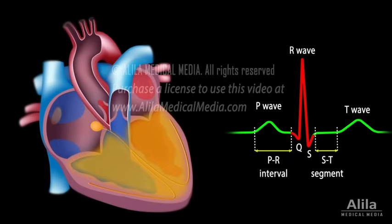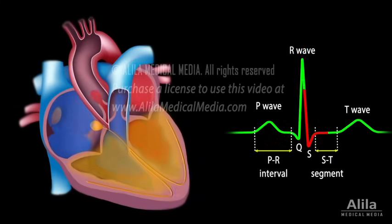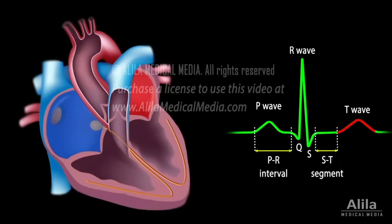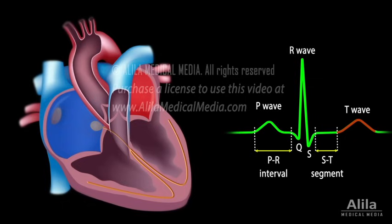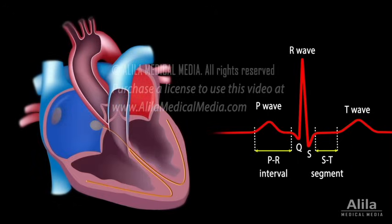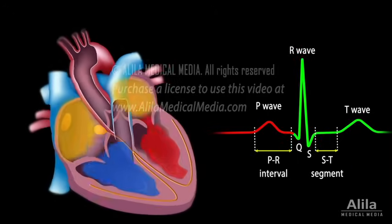The ST segment reflects the plateau of action potentials in the ventricles. This is when the ventricles contract and pump blood. The T wave represents ventricular repolarization immediately before ventricular relaxation, or ventricular diastole. The cycle repeats itself with every heartbeat.